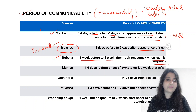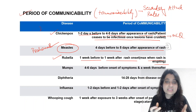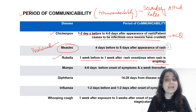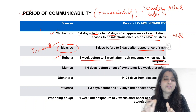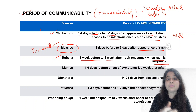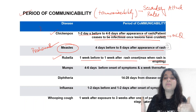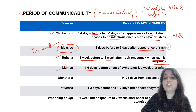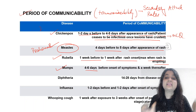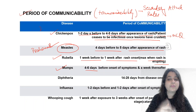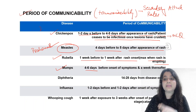So to summarize: chicken pox is one to two days before to four to five days after; measles is four to five days before to four to five days after; rubella, instead of four to five days, it's seven days — one week before to one week after. Now for mumps: four to six days before onset of symptoms and one week afterwards, so four to six days before and seven days thereafter.